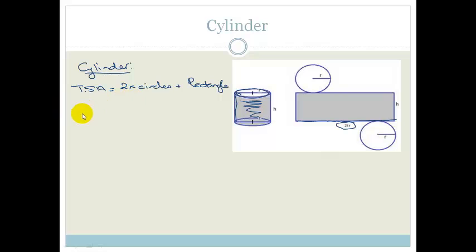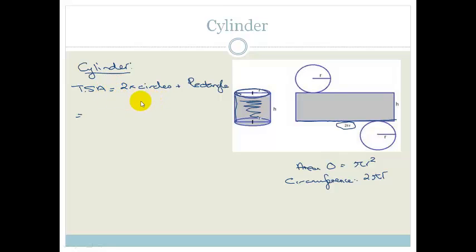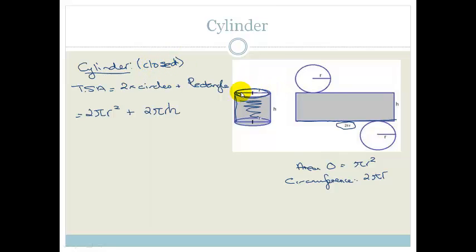The area of a circle is πr², and the circumference is 2πr. Therefore, the total surface area of a closed cylinder is 2πr² + 2πrh. If the cylinder is open (like a can with no lid), then you only include one circle at the bottom, not two.